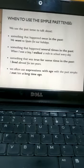We use the past simple to talk about something that happened only once in the past, like 'We went to Spain for our holidays.' Another situation is when something happened several times in the past, like 'When I was a boy, I walked a mile to school every day.'